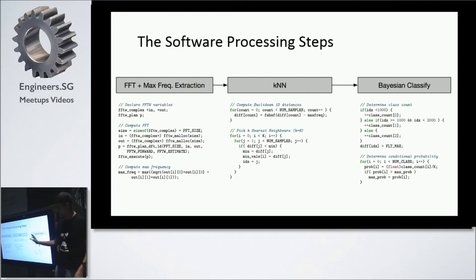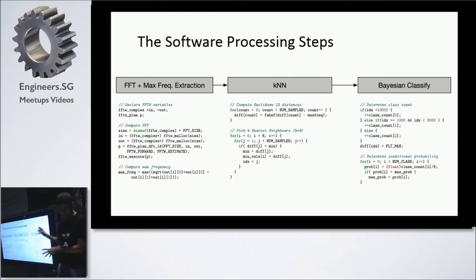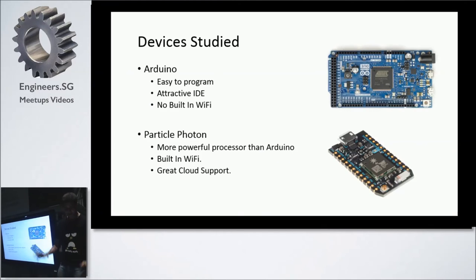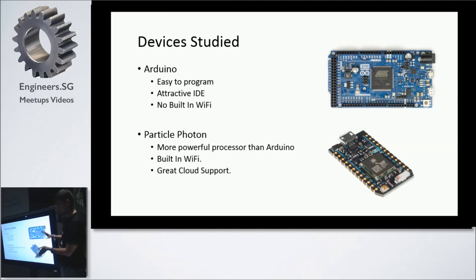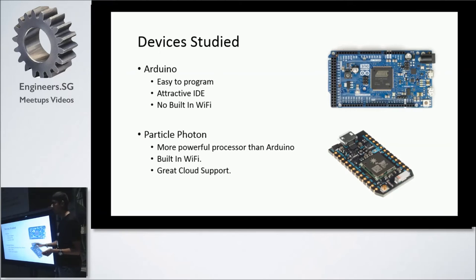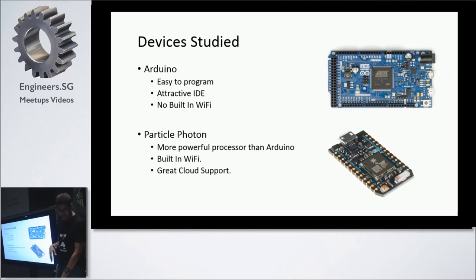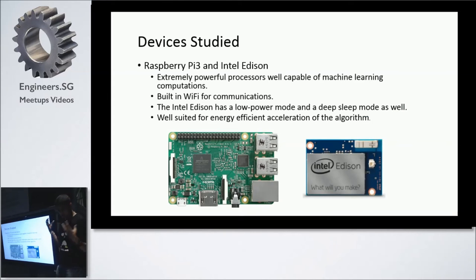These are the software processing steps: FFT with maximum frequency extraction, KNN, and a Bayesian classifier — just pseudocode here, but the real code can be made available later. The first two devices we studied were the Arduino and the Photon. The key takeaway is that the FFT using 8K and 16K samples is too heavy to run on both — if we run the FFT we can't do the Bayesian classification, so they don't solve the eventual purpose.